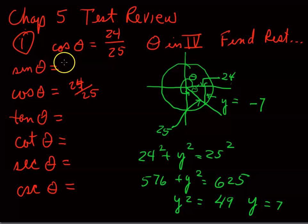Sine is the opposite over the hypotenuse, or negative 7 over 25. Tangent is the opposite over the adjacent, or negative 7 over 24. And then the cotangent is the reciprocal of the tangent, 24 over negative 7. The secant is the hypotenuse over the adjacent, or 25 over 24, which is also the reciprocal of the cosine. And the reciprocal of the sine is 25 over negative 7.